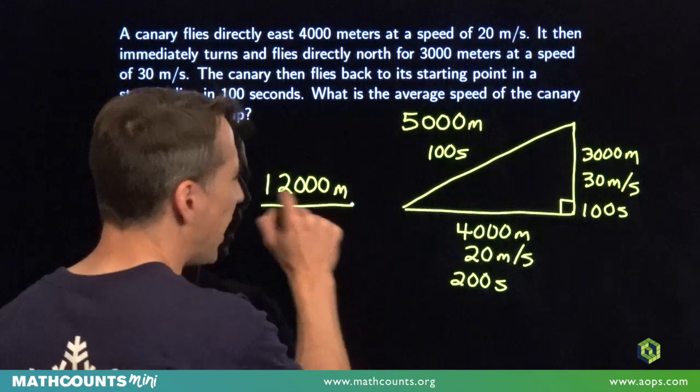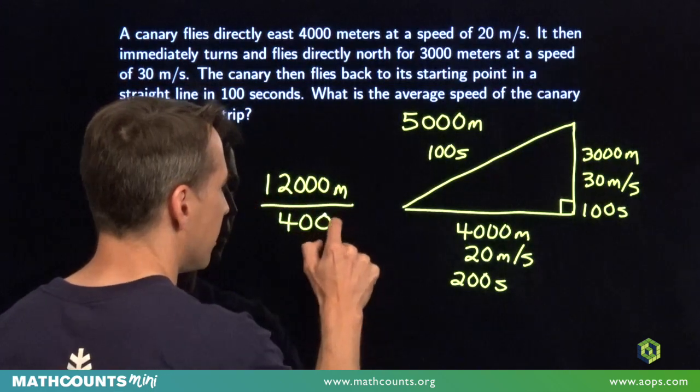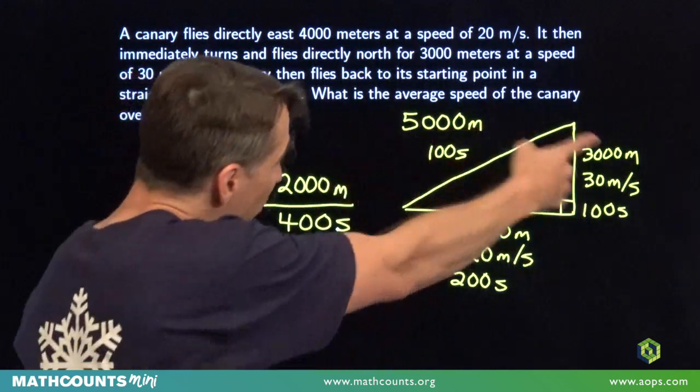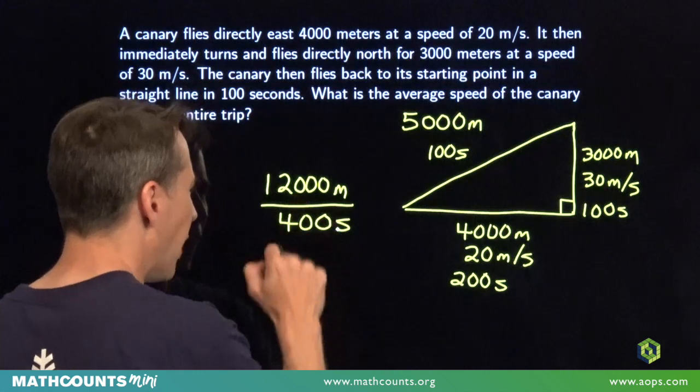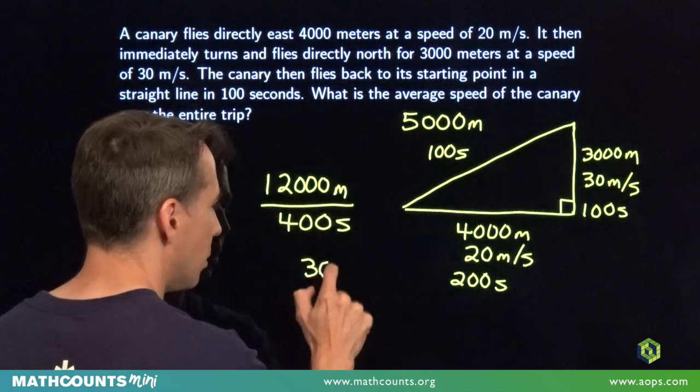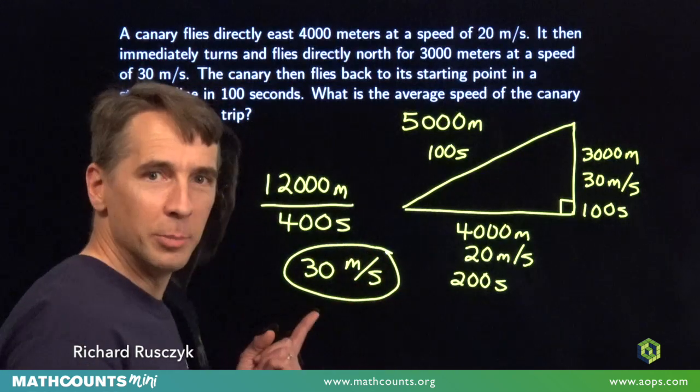So the canary goes 12,000 meters in 400 seconds. So the average speed of the canary over the entire trip we just divide. 12,000 divided by 400 is 30 meters per second.